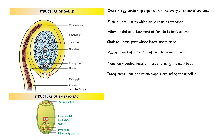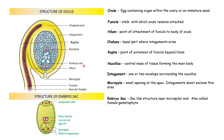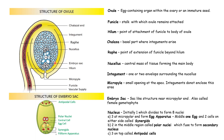The integuments enclose the nucellus, except at the apex, where there is a small opening known as micropyle. Near the micropyle end is the sac-like structure known as the embryo sac, or the female gametophyte, which lies embedded within the nucellus. Initially, there is only one nucleus in the embryo sac. Later, this divides to form eight nuclei.